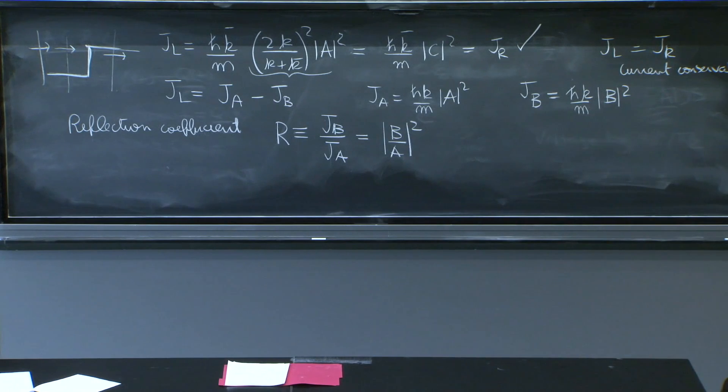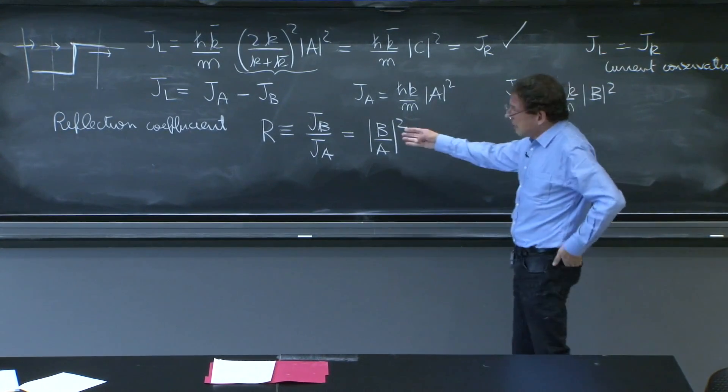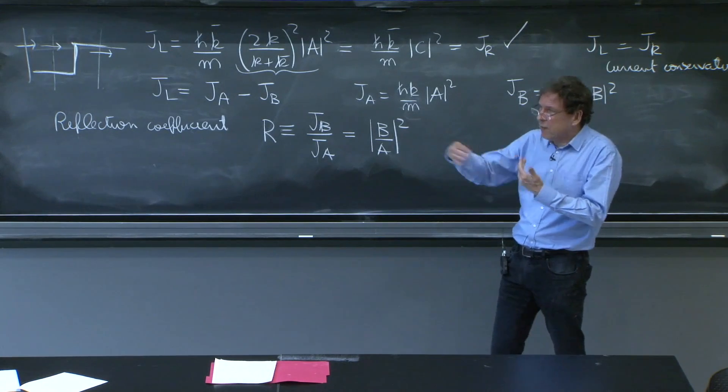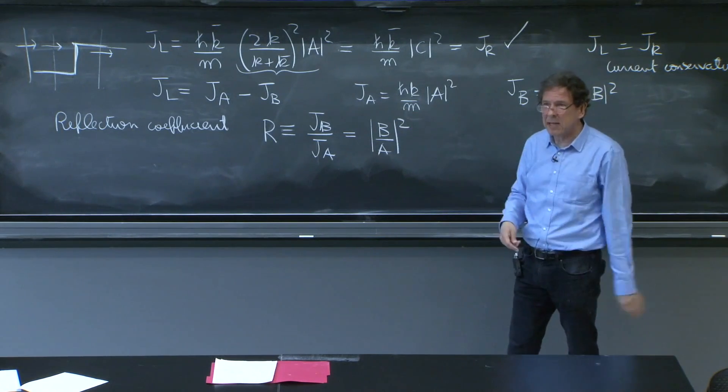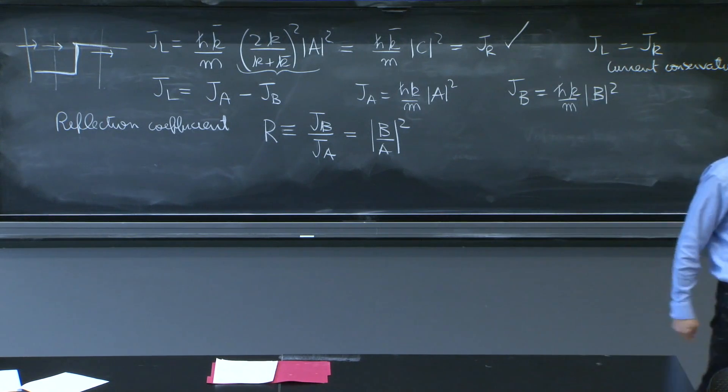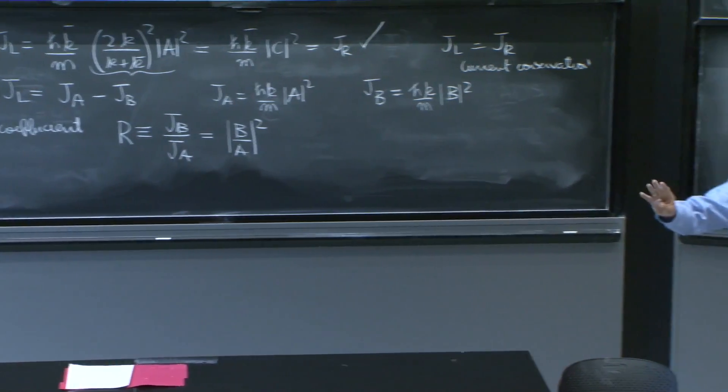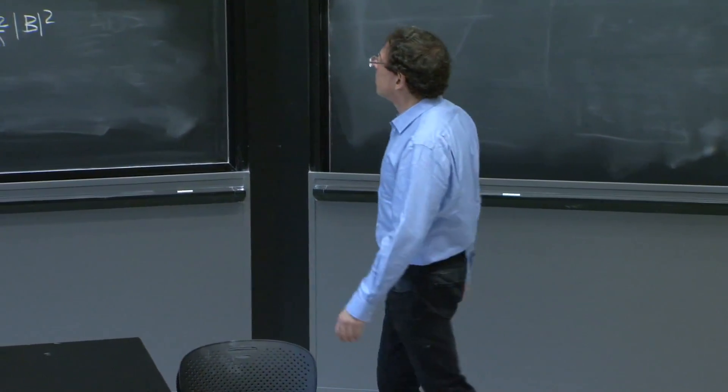And that's an interesting number. Now there's some physics in it. It tells me how much of the probability gets reflected as a function of the probability that is incident. So that's a good measure. If you get a reflection coefficient of 1 tenth, then you would expect a tenth of the particles to be reflected. Now we don't have particles yet. This is a non-normalizable solution. But still, this will be the intuition very soon.